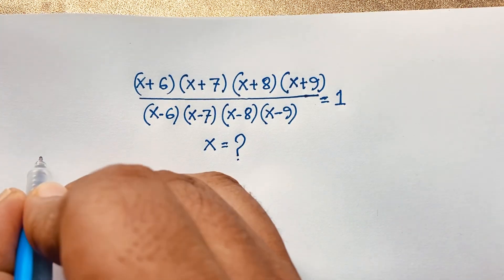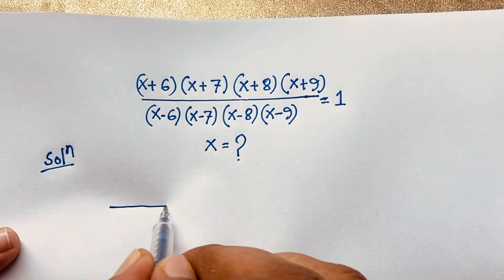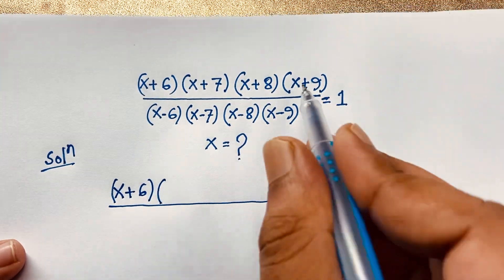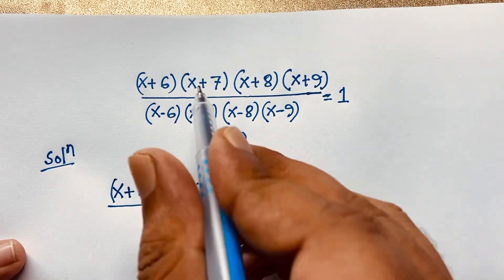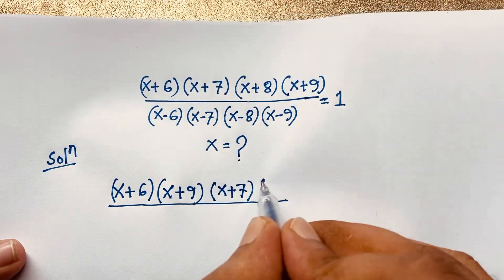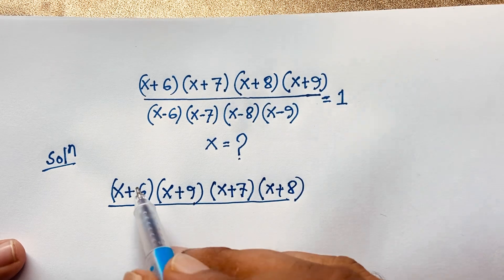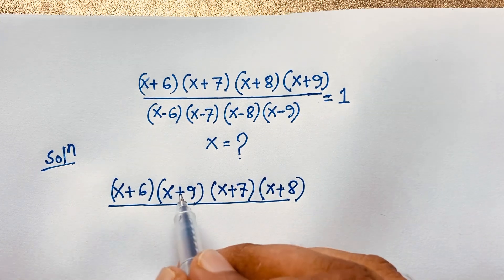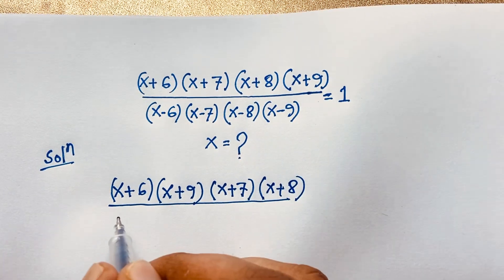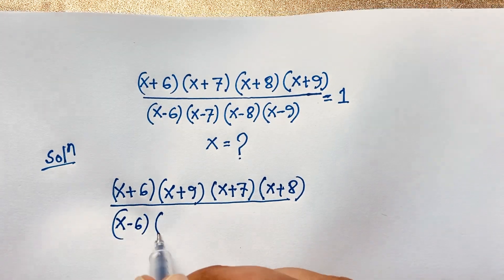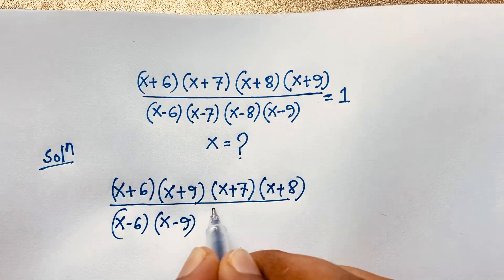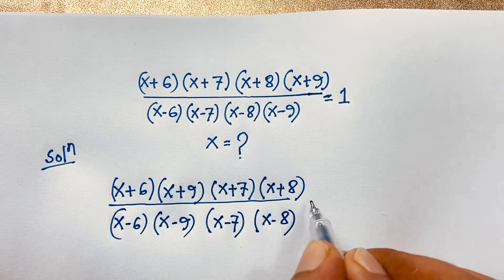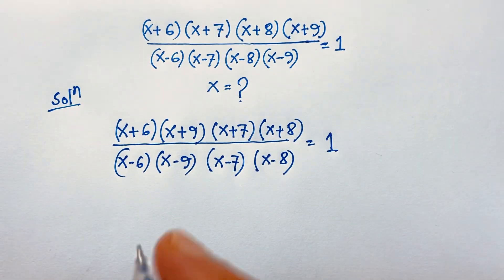So for our solution, I take x+6 and pair it with x+9, then x+7 with x+8. Notice that 6+9=15 and 7+8=15, so both pairs sum to 15. I multiply them accordingly. The same rearrangement applies to the denominator: (x-6)(x-9)(x-7)(x-8) is equal to 1.